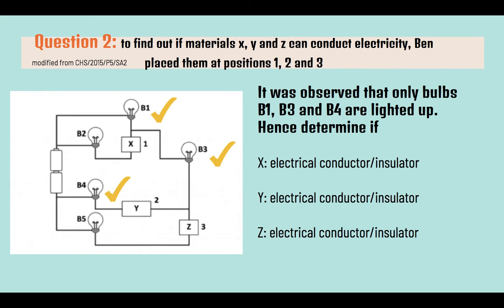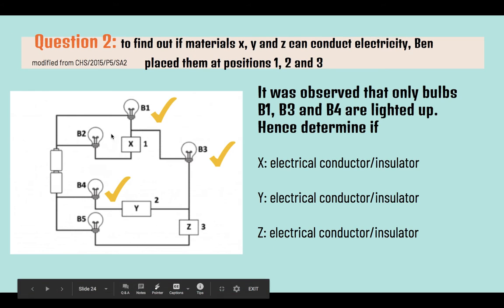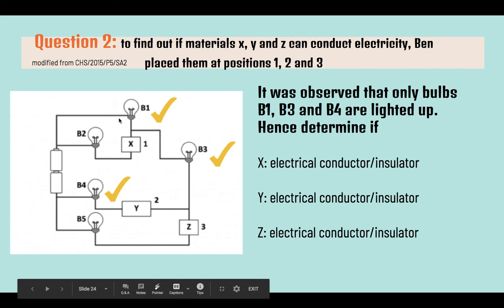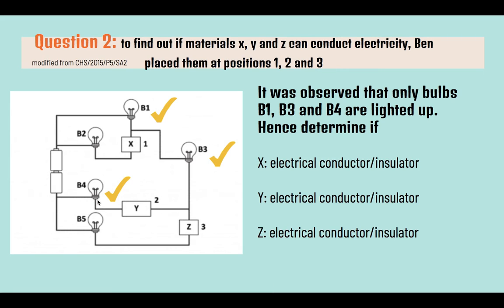Next, Question 2: To find out if materials X, Y, and Z can conduct electricity, place them at positions 1, 2, and 3. It was observed that only bulbs B1, B3, and B4 are lighted up. Hence, determine if X, Y, and Z are electrical conductors or insulators.